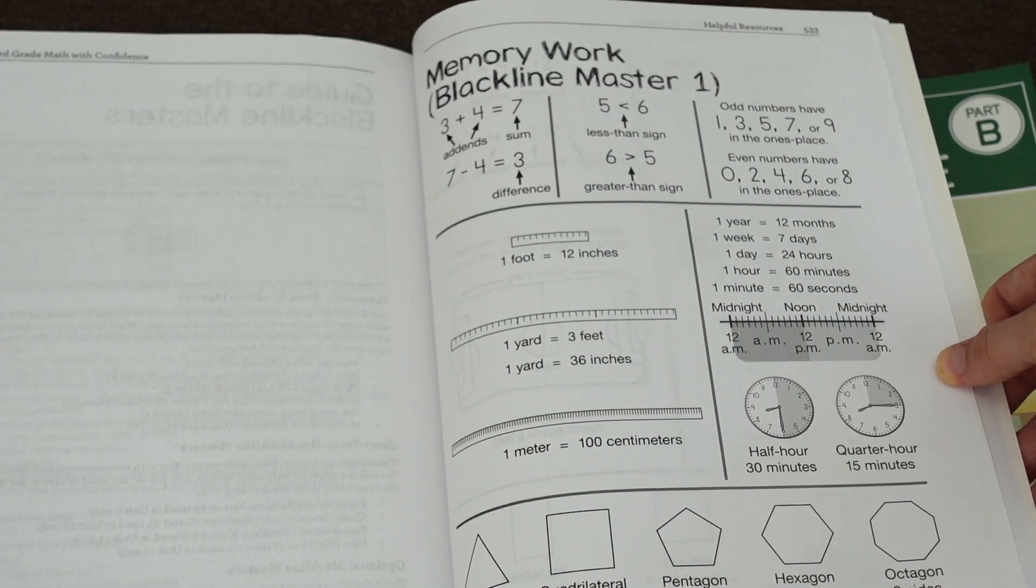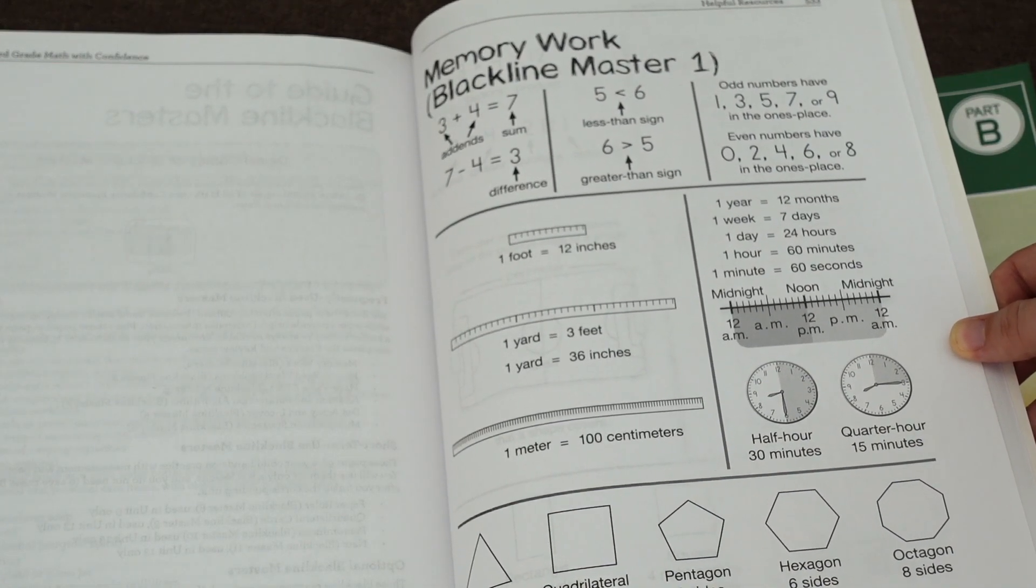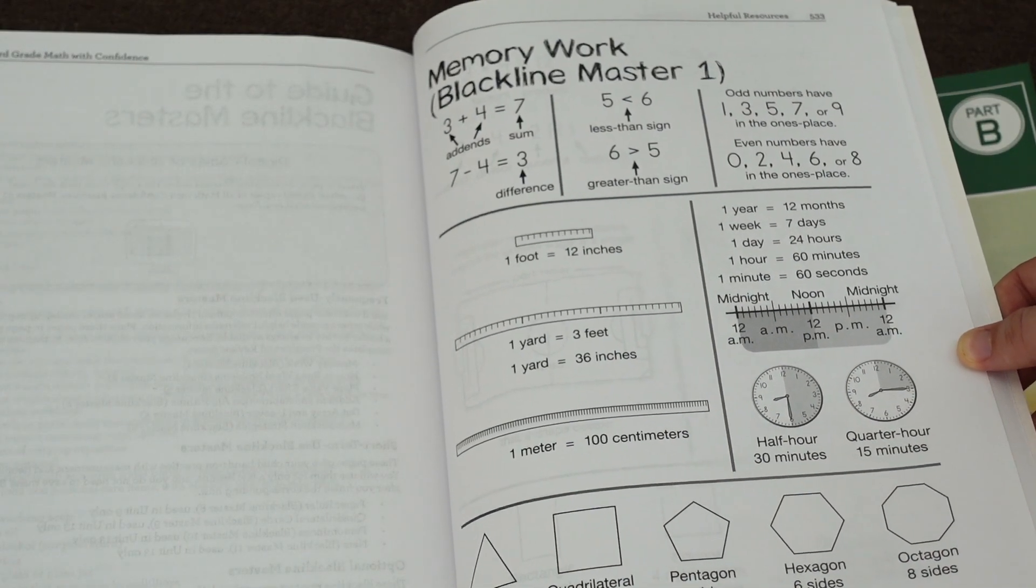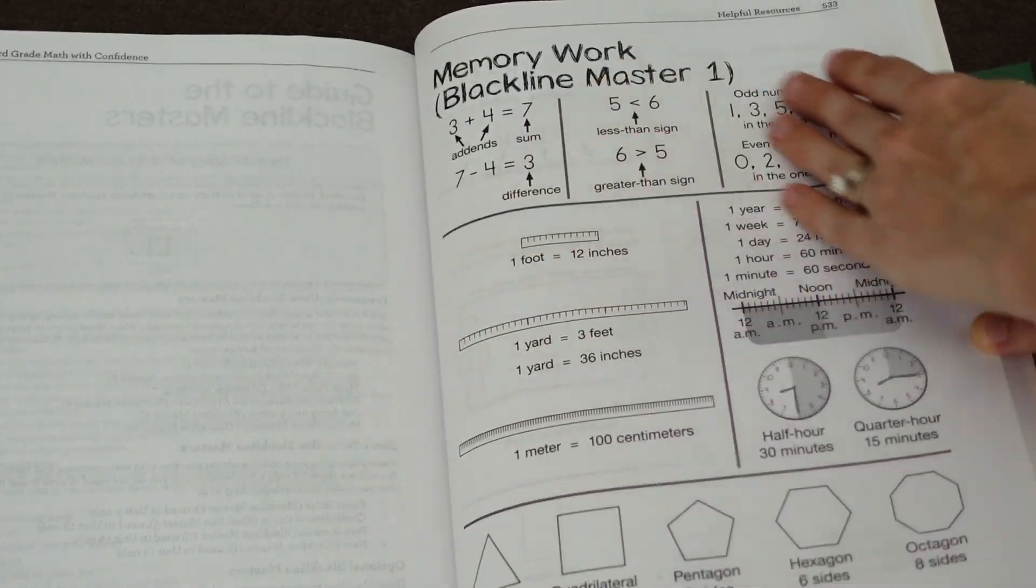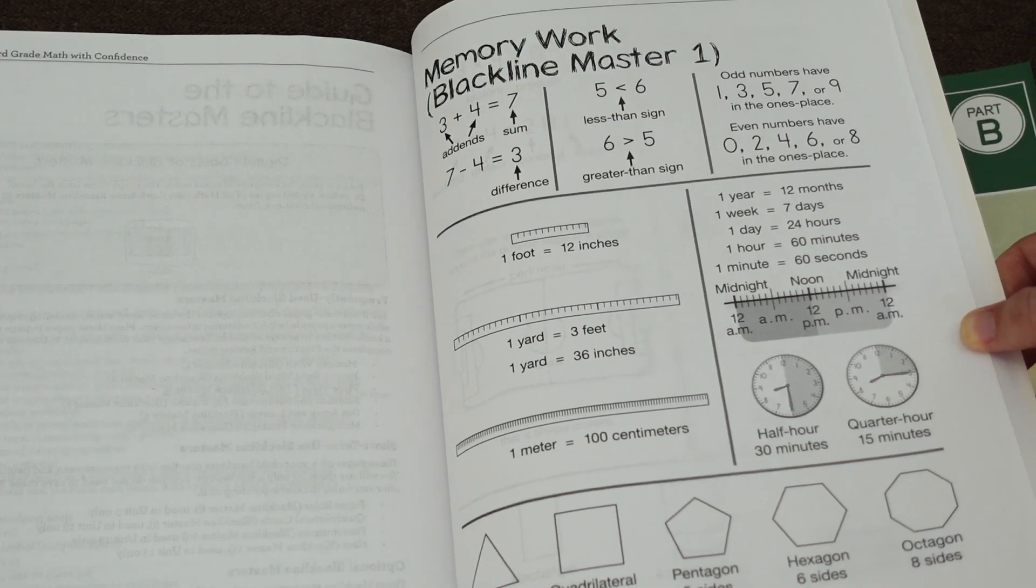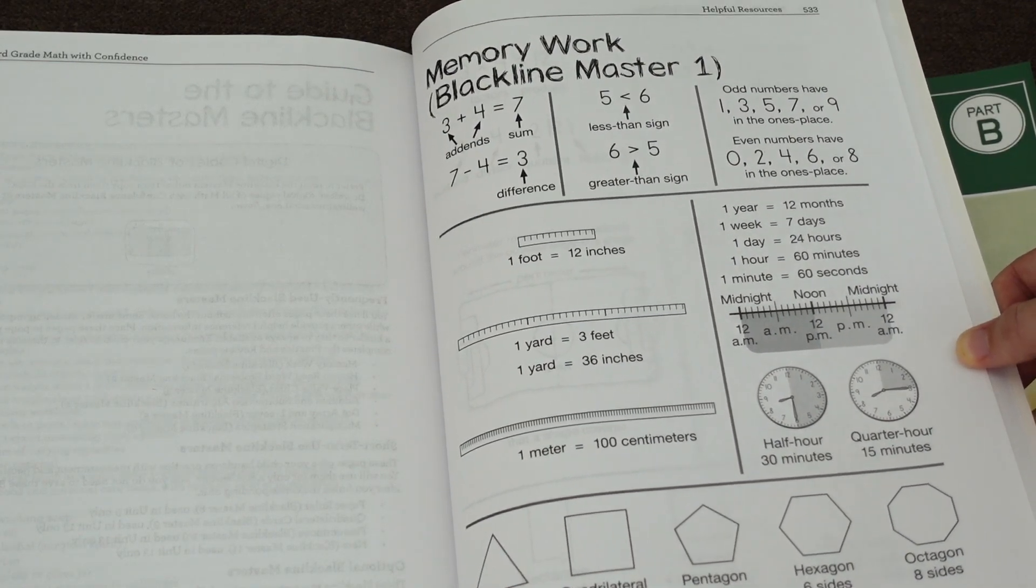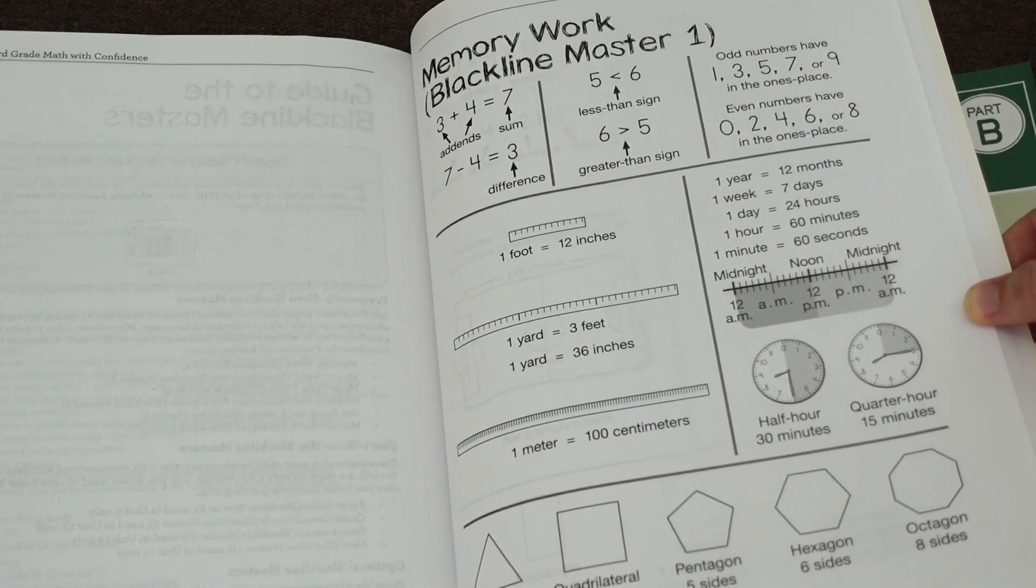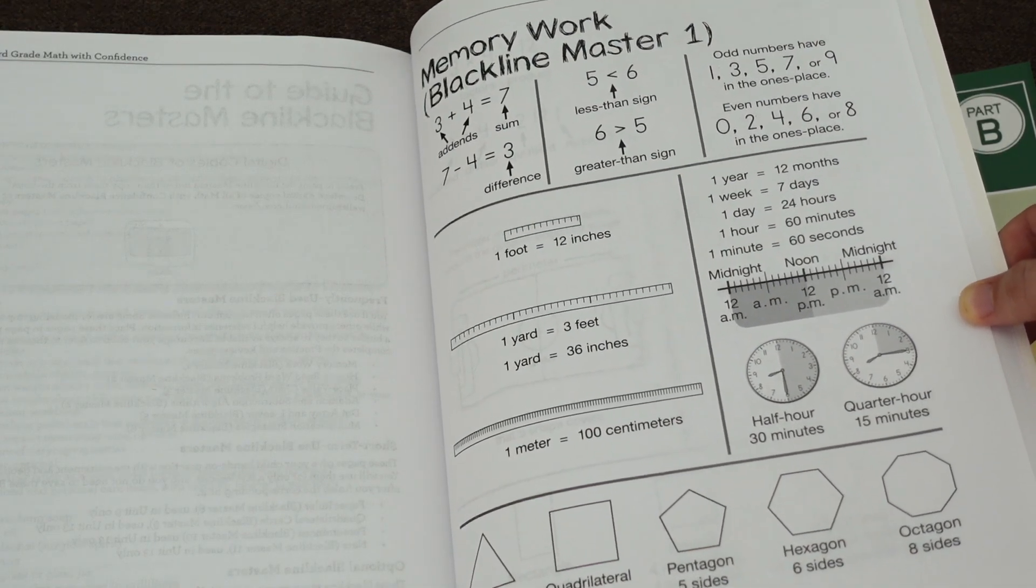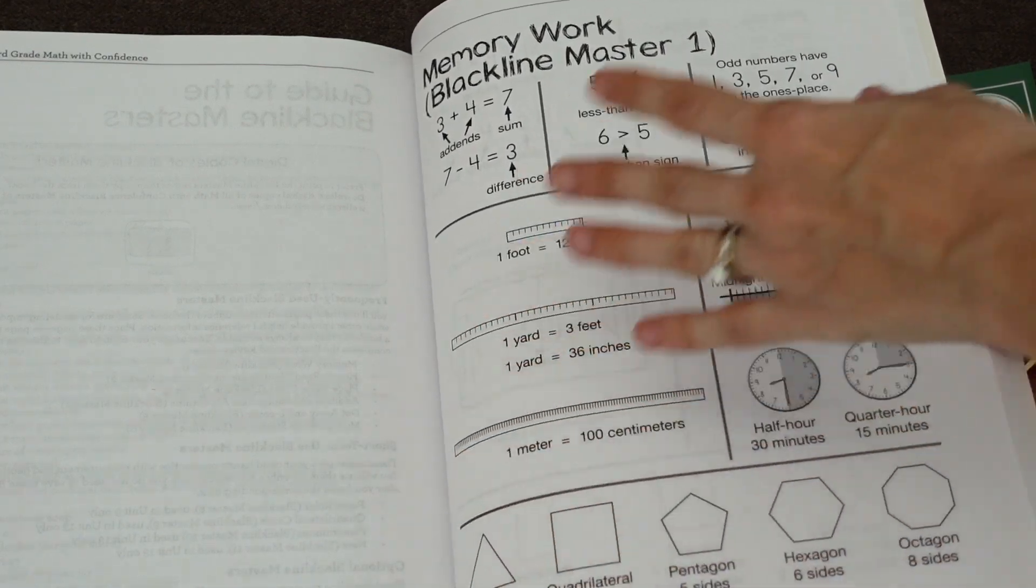In the teacher's guide, there are also a number of black line masters at the end of the book. I did want to quick show you this because I thought that this is really useful. Here's a memory work black line master. So you can copy this or laminate it, put it in a plastic sleeve because these are the things that your child needs to have mastered and memorized. And it's good to be able to reference. It's good to be able to drill. You will be prompted to drill and review memory work at the beginning of each lesson, which is a feature I really like because I don't tend to remember randomly to ask, hey, how many days are in a week? How many months are in a year? And kids do need repetition to master just this memory work.